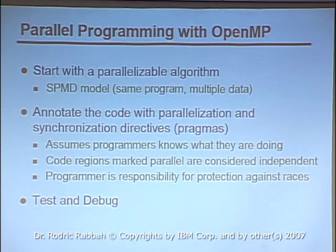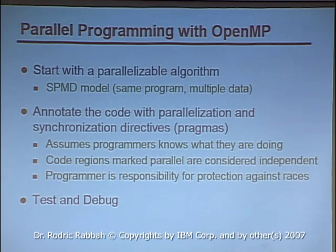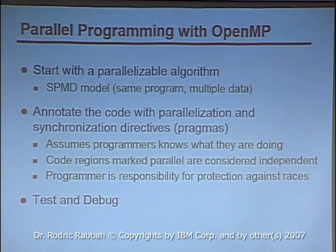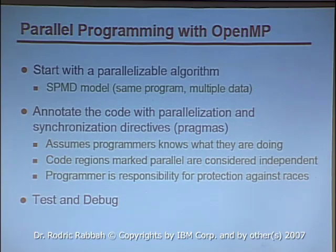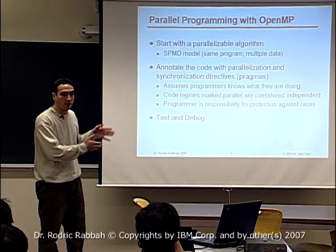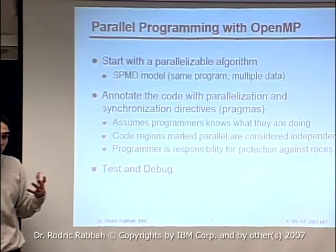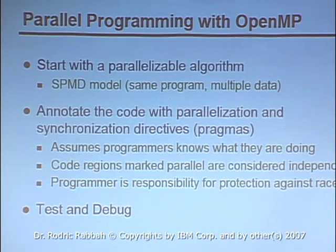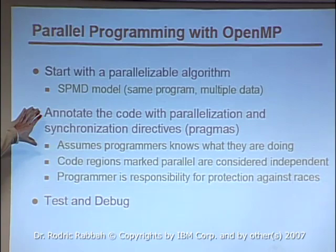You start with your parallel code — same program, multiple data parallelization, similar to SIMD (single instruction, multiple data) from the previous lecture which executes the same operation over multiple data elements. This talk is largely focused on the SPMD model, where you have one central computation and try to parallelize it for best performance. You annotate the code with what's parallel and what's not, and add synchronization directives. In OpenMP, the programmer is largely responsible for getting synchronization right.